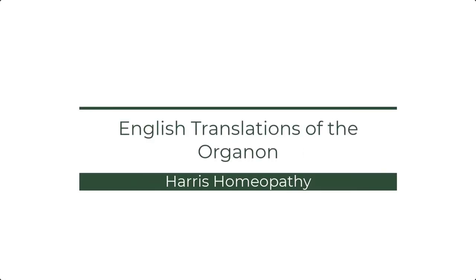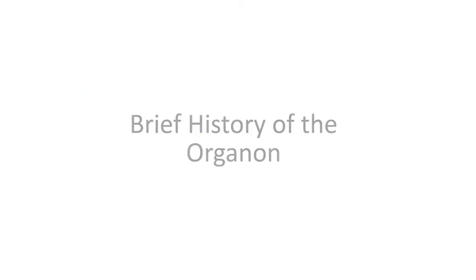Hi everybody, it's Brittany. Today we're going over the different English translations of the Organon. You might think logically that there's only one version of a book, but Hahnemann wrote six editions of the Organon in German, and most editions have been translated into English multiple times. So we actually have a whole bunch of different books, and I have wasted a lot of time and money tracking down different versions only to find out that I have gotten a duplicate — so hopefully I will save you from my fate.